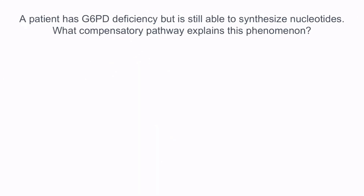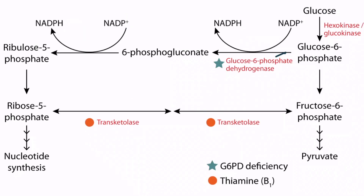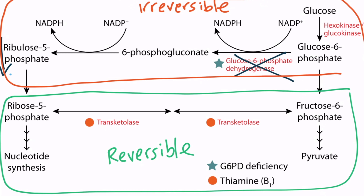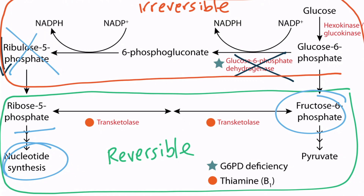A patient has glucose 6-phosphate dehydrogenase deficiency, but is still able to synthesize nucleotides. What compensatory pathway explains this phenomenon? Looking at the HMP shunt pathway, a deficiency of G6PD will result in decreased ribulose 5-phosphate because this part of the pathway is irreversible — notice the arrows only go in one direction. However, the lower part of the pathway is reversible. This means that even without ribulose 5-phosphate, cells will be able to convert fructose 6-phosphate into ribose 5-phosphate, which can then be used to synthesize nucleotides. So patients with a G6PD deficiency will still be able to synthesize nucleotides due to the activity of the reversible part of the HMP shunt.